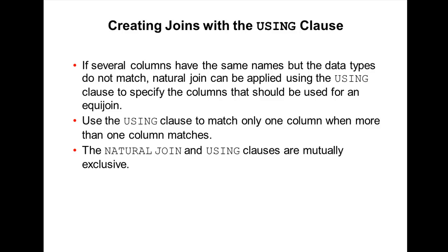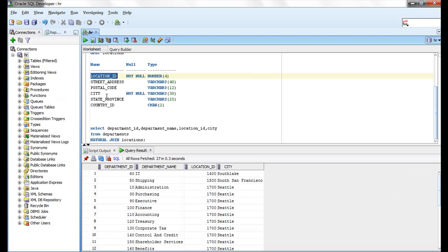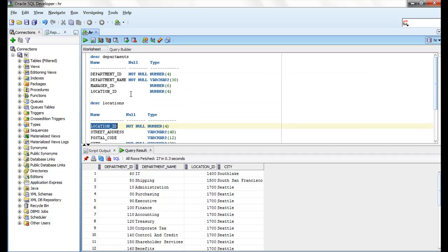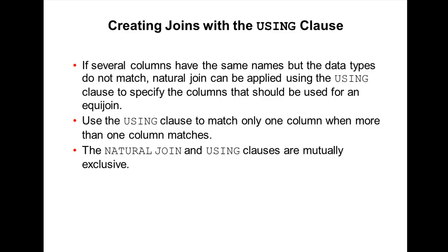If several columns have the same name but data types do not match, natural join can be applied using the USING clause to specify which columns should be used for the equi-join. So if you have more than two identical column names and the data types don't match, you can apply natural join using the USING clause.